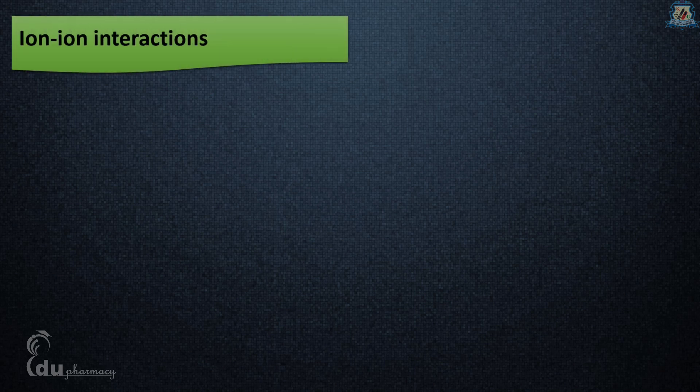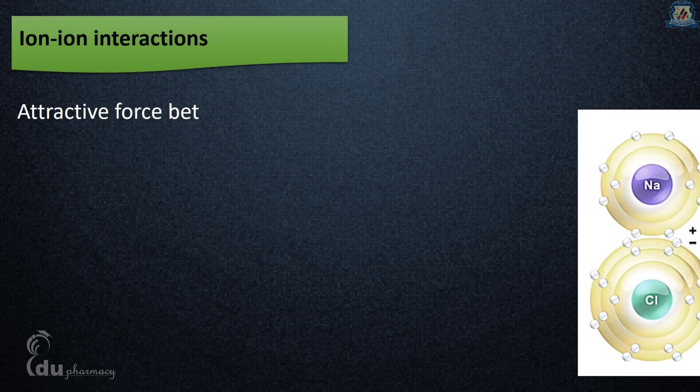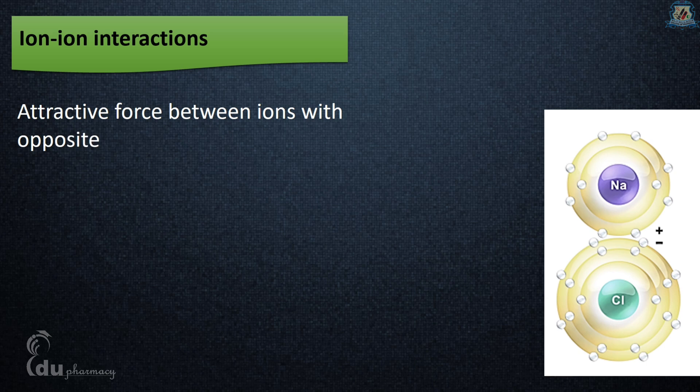Ion-ion interactions: ionic interactions arise from electrostatic attraction between two groups of opposite charges. They are also referred to as ionic bonds and are forces that hold together ionic compounds.